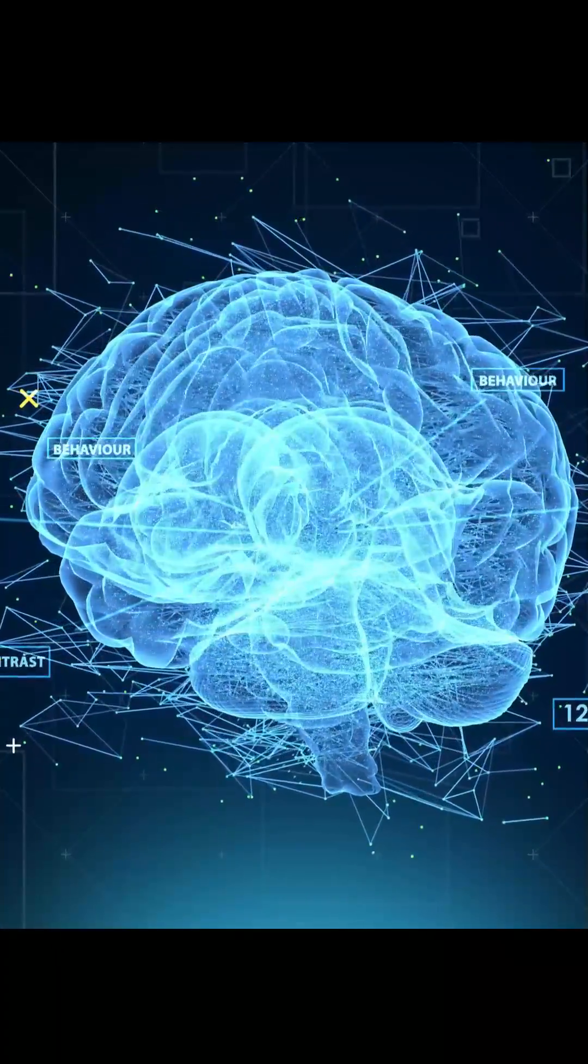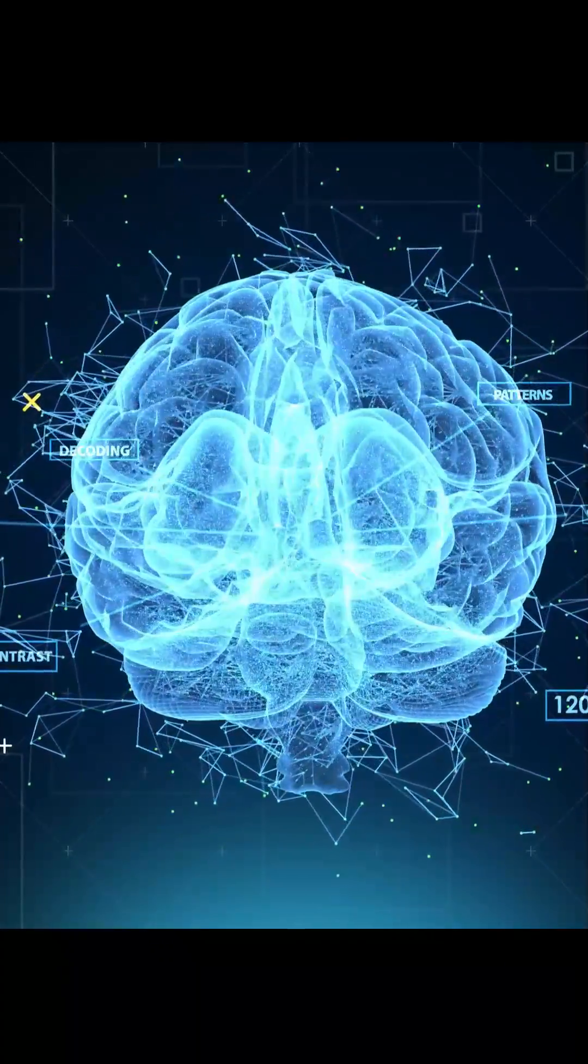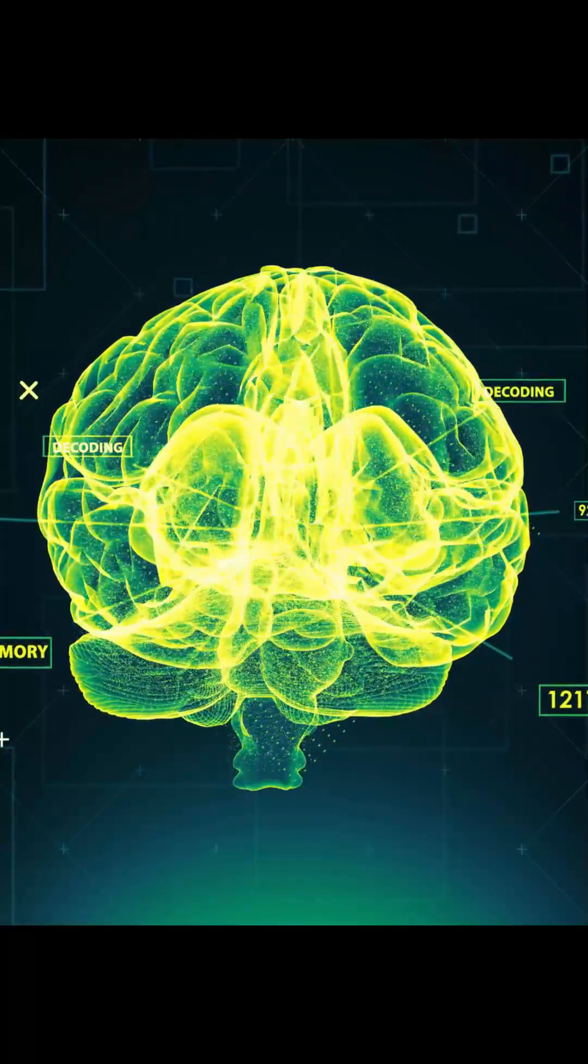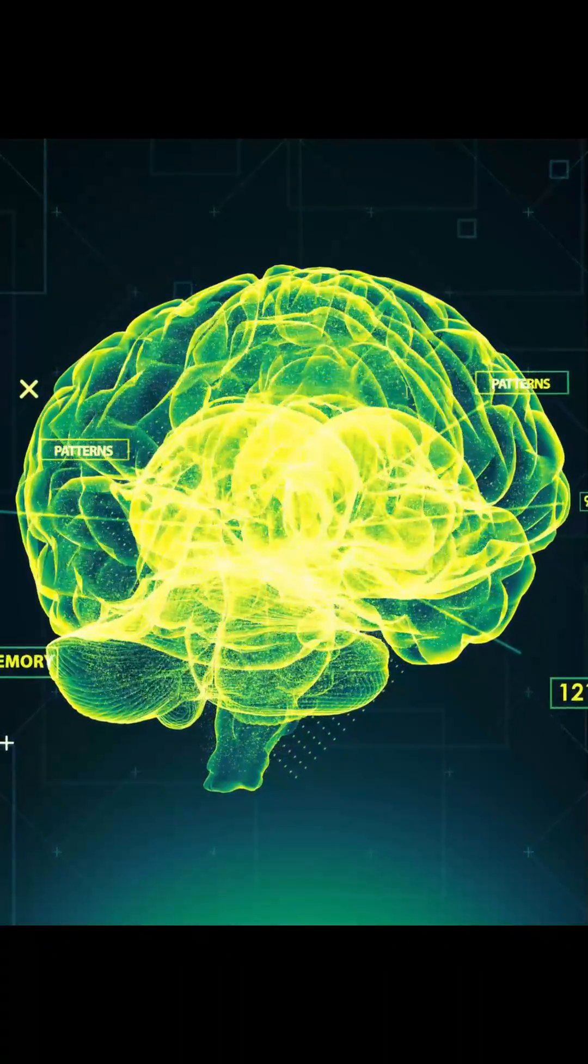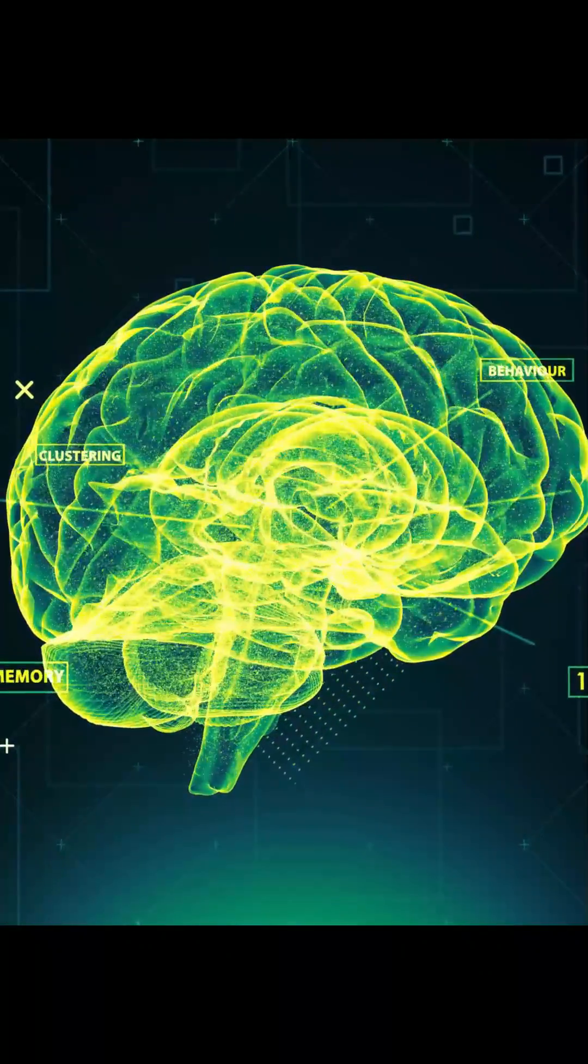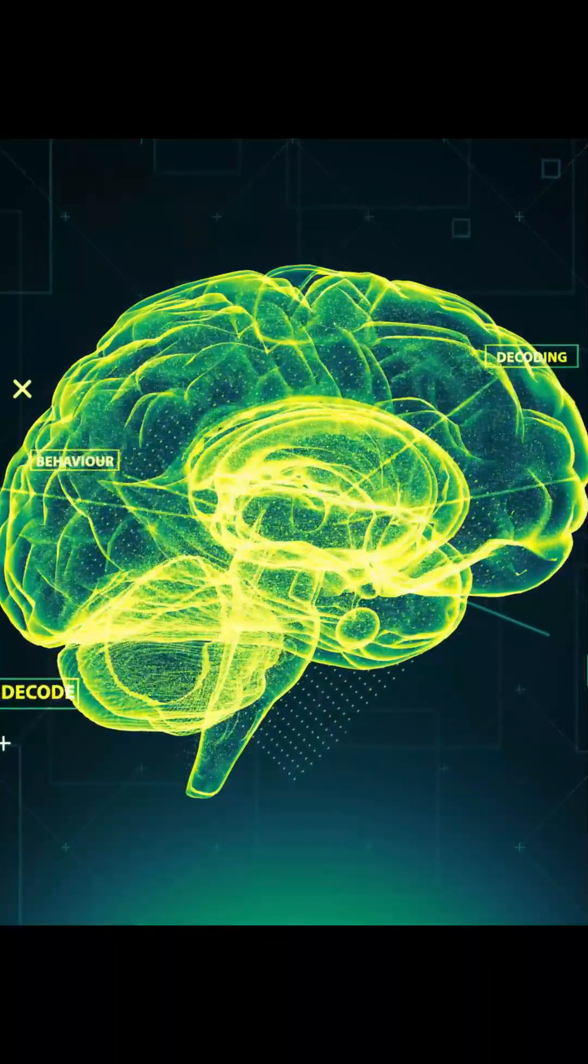This part of the brain is responsible for a wide range of functions, including regulating emotions, making decisions, and controlling impulses. It is often referred to as the CEO of the brain, because it is involved in so many high-level cognitive processes.